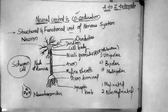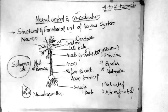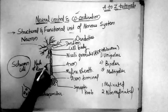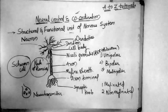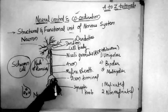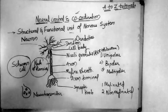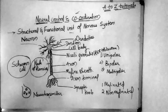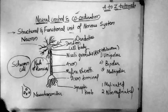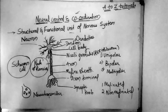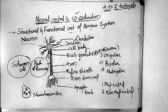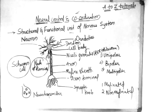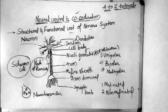Between two adjacent myelin sheaths there is a gap called the Node of Ranvier. The end of the axon is the axon terminal, which has a bulb-like structure called the synaptic knob. The synaptic knob contains synaptic vesicles, and those vesicles contain the chemical neurotransmitter.